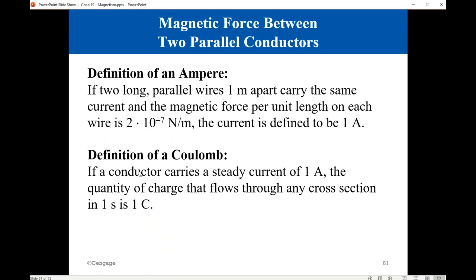We may also define the coulomb: if a conductor carries a steady current of 1 ampere, the quantity of charge that flows through any cross section in 1 second is 1 coulomb.